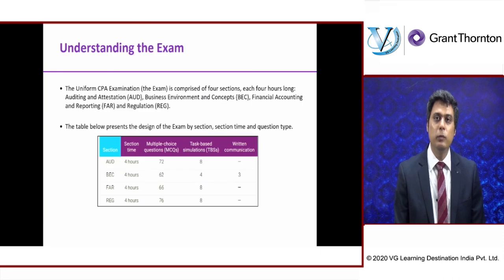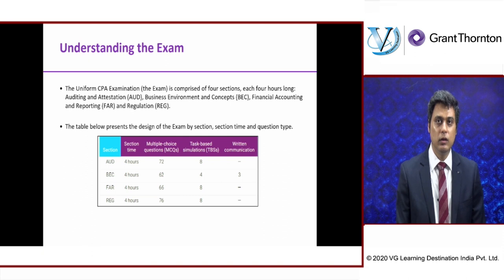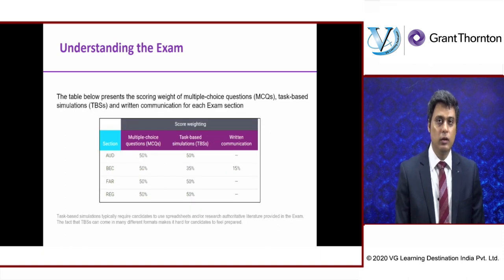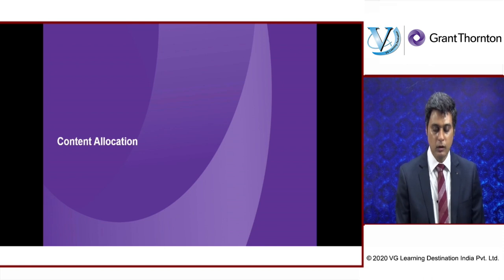Understanding the exam — one of my colleagues would have taken you through this slide in another video. I want to draw your attention to row number three in the table, which is Financial Accounting and Reporting. It's a four-hour exam divided into 66 multiple choice questions and eight task-based simulations. The score weightage is divided into 50% for MCQs and 50% for task-based simulations, which basically means that 66 questions will fetch you 50% and the eight TBSs will fetch you the remaining 50%.